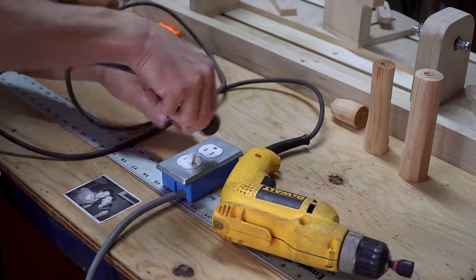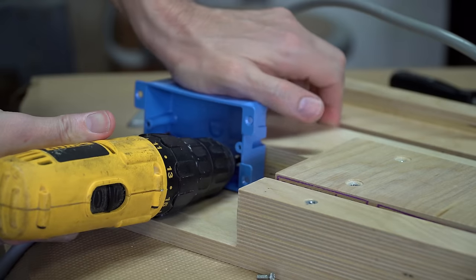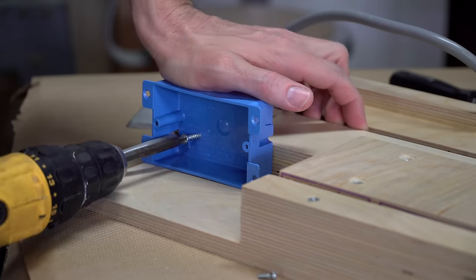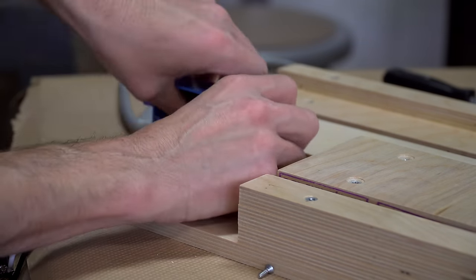I created this small switch box that basically just has a plug and a switch that controls that plug. This will act as a safety and allow me to cut power to the drill at any point in time. I then mounted the switch box to the lathe itself.